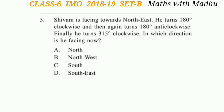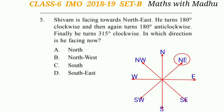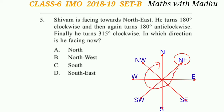Now question 5. Sebum is facing towards northeast. He turns 180 degrees clockwise and then again turns 180 degrees anticlockwise. Finally, he turns 315 degrees clockwise. In which direction is he facing now? He is facing towards northeast. After turning 180 degrees clockwise he will be facing southwest, then after turning 180 degrees anticlockwise he will be facing northeast again, and finally after turning 315 degrees clockwise he will be facing north.